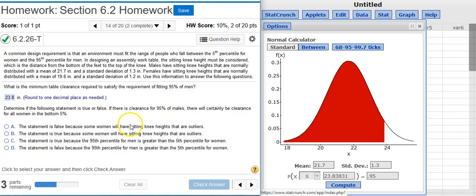The second part of this problem says: determine if the following statement is true or false. If there is clearance for ninety-five percent of males, there will certainly be clearance for all women in the bottom five percent.